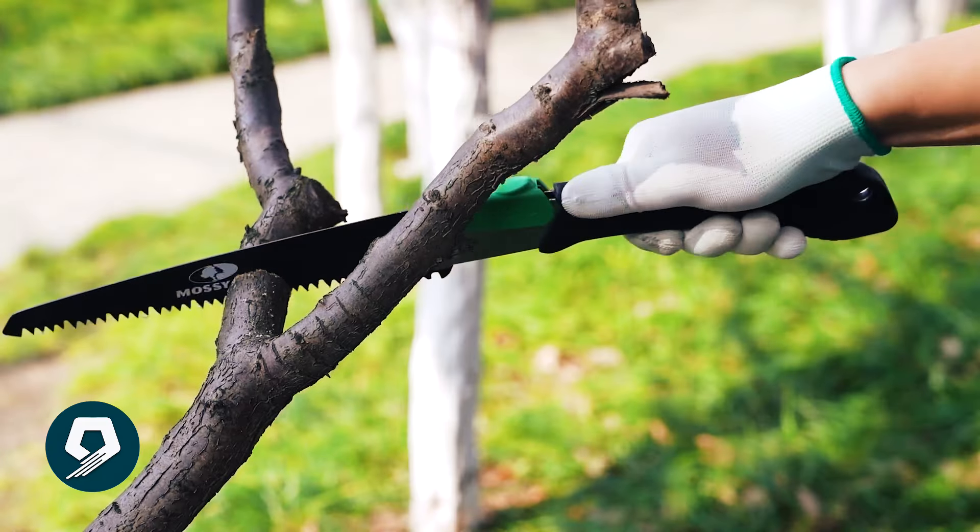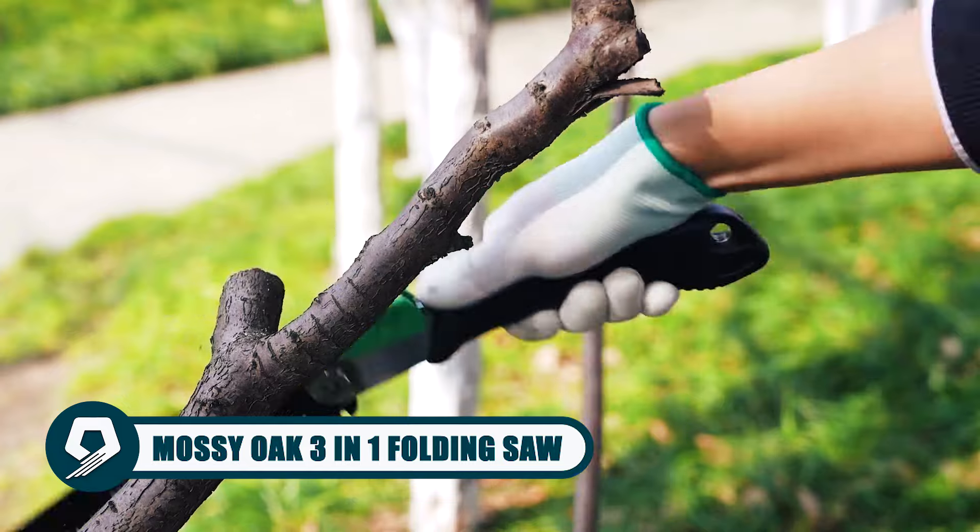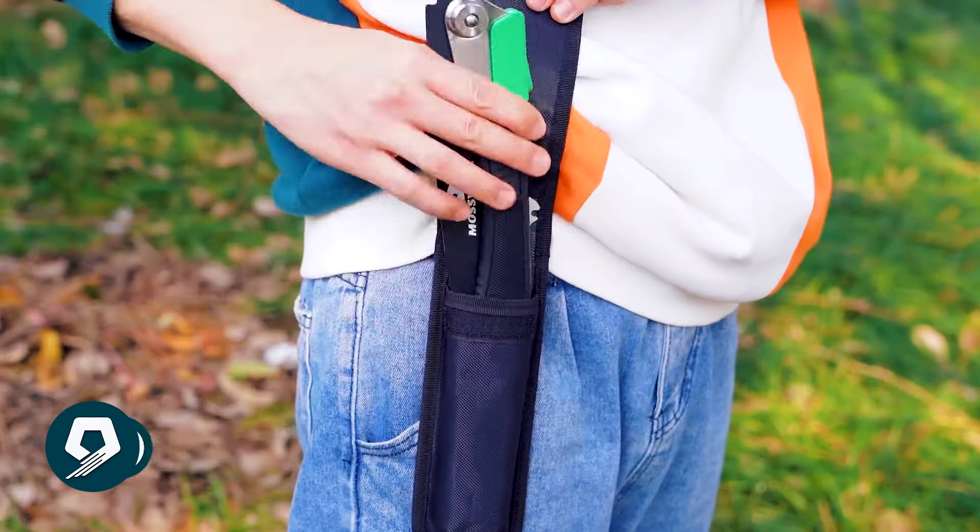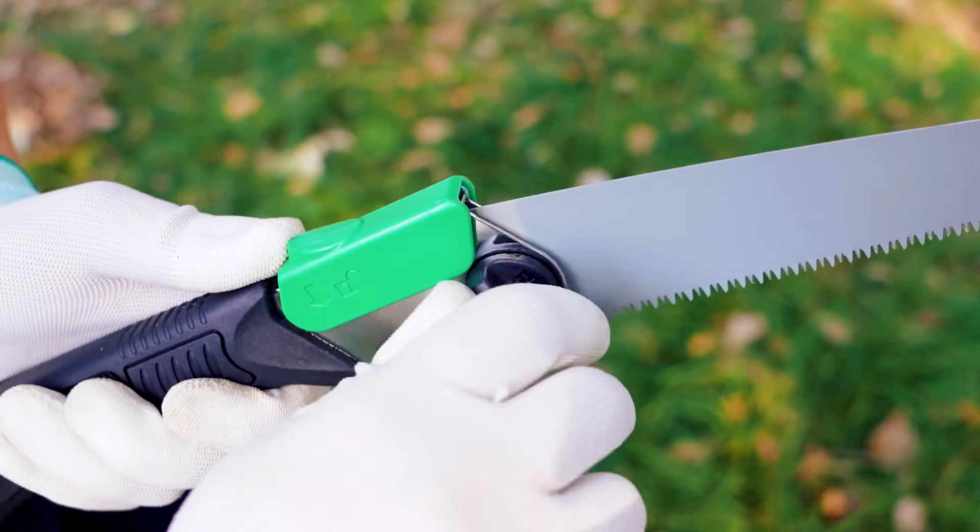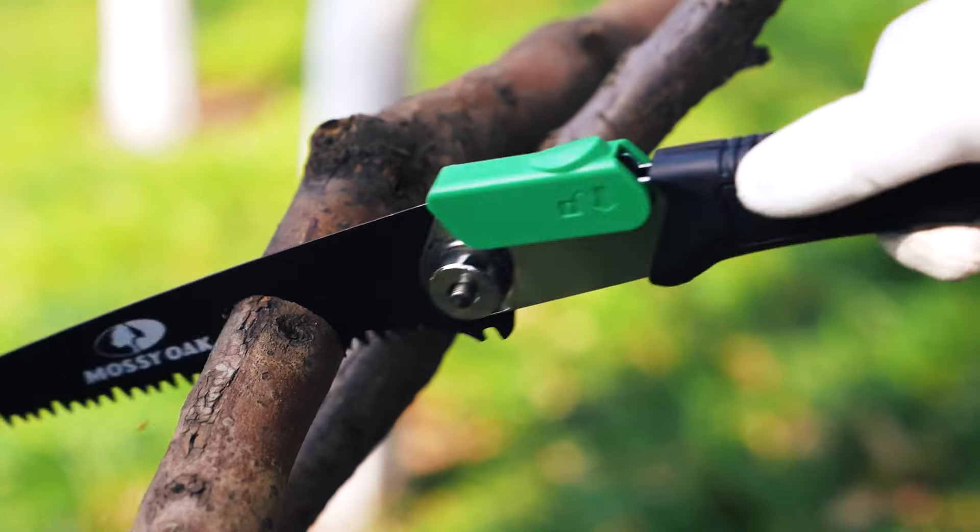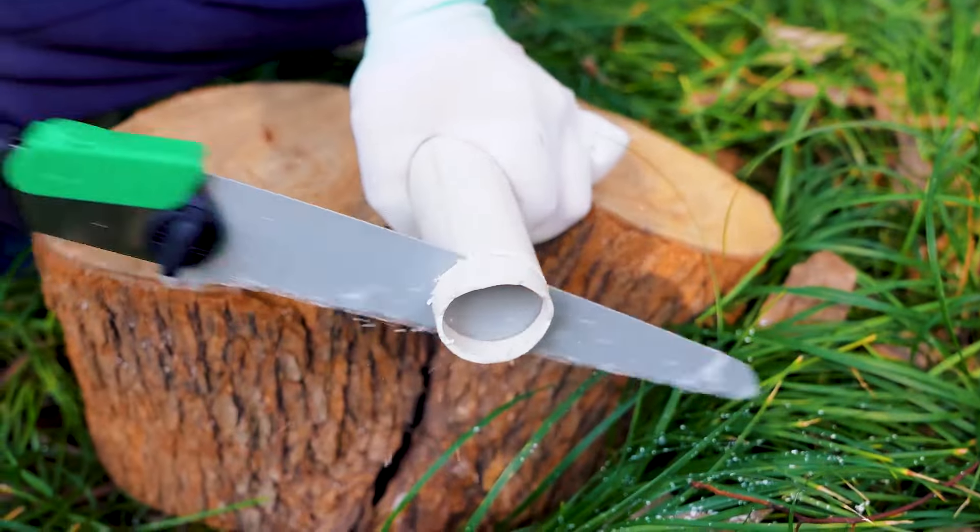Tackle outdoor tasks with the Mossy Oak 3 in one folding saw, a versatile tool for camping, hunting, and bushcraft. Featuring easy blade change with triple-cut razor-sharp teeth, this folding hand saw effortlessly handles wood, bone, metal, and plastic.